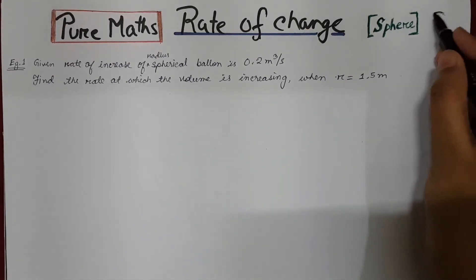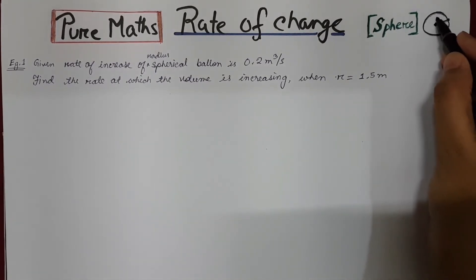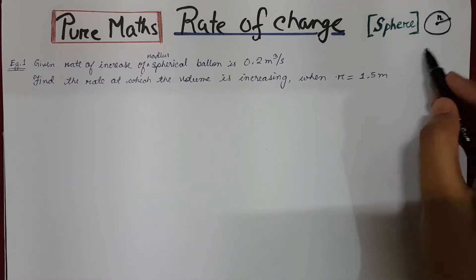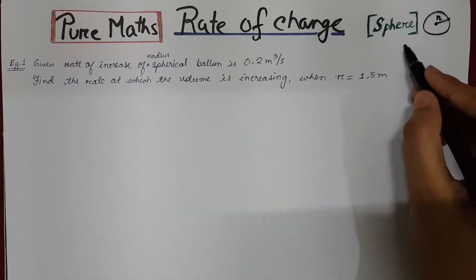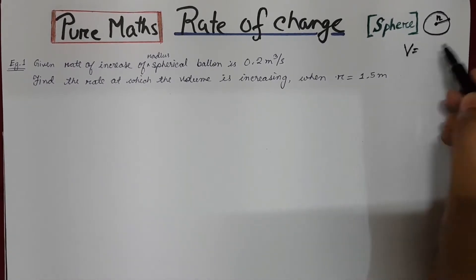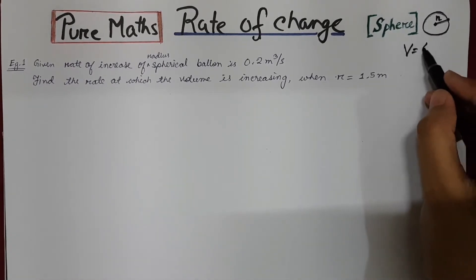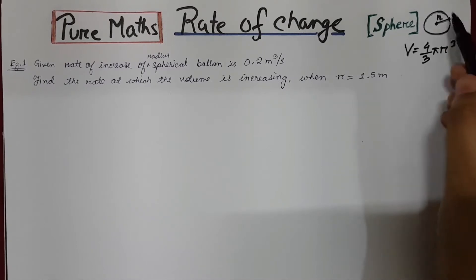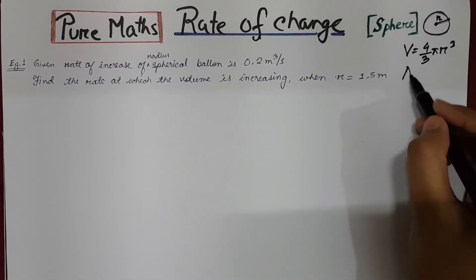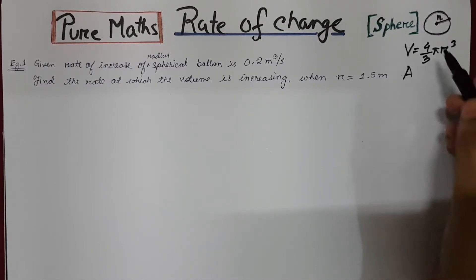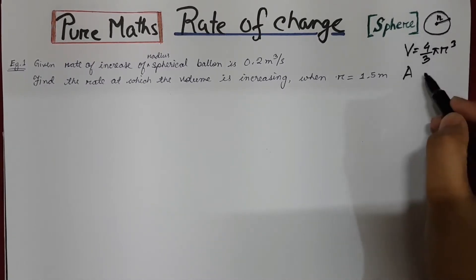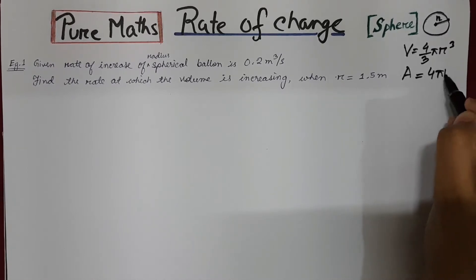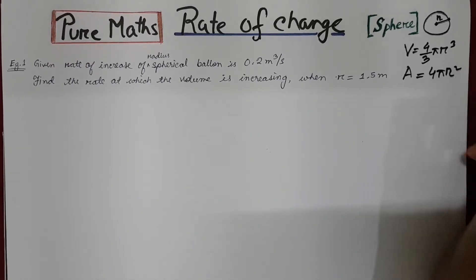For any spherical object, if r is the radius, we need to know two formulas: the volume of the sphere, which is 4/3 π r cubed, and the total surface area of the sphere, which is 4π r squared.